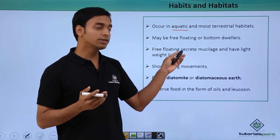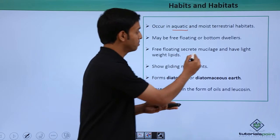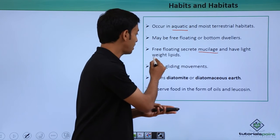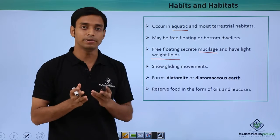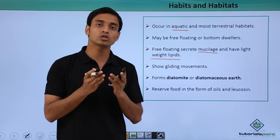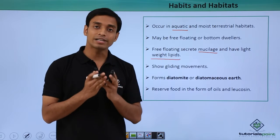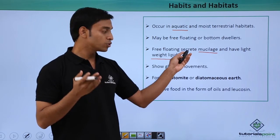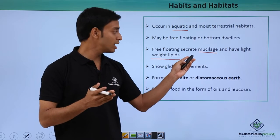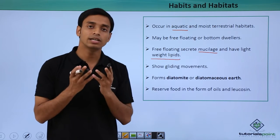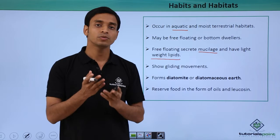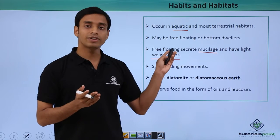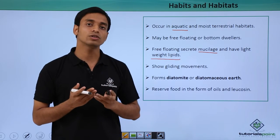The free floating forms secrete mucilage and have light wet lipids. These are the two reasons why some chrysophytes can freely float on the water surface. These properties aid chrysophytes in floating freely on the water surface.